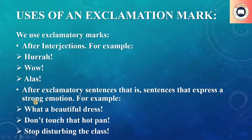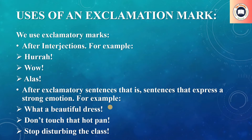For example, 'What a beautiful dress!' This sentence expresses a strong emotion — a sense of joy or wonder about the dress. She is admiring how beautiful the dress is, and that is why we place an exclamation mark after that sentence, as it expresses strong emotion.